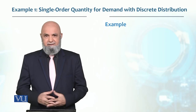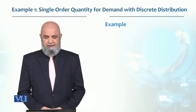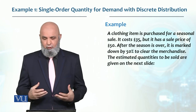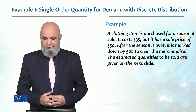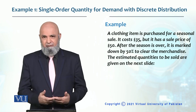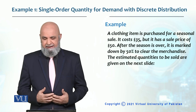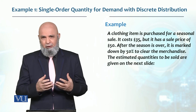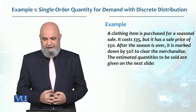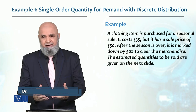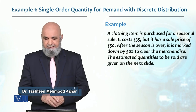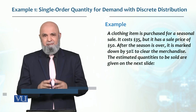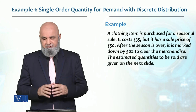Let's look at a solved example. There is a clothing item purchased for seasonal sales at a cost of $35. The shopkeeper purchased it for $35 and sells it for $50, giving a profit of $15. After the sales season is over, the item is marked down by 50 percent.